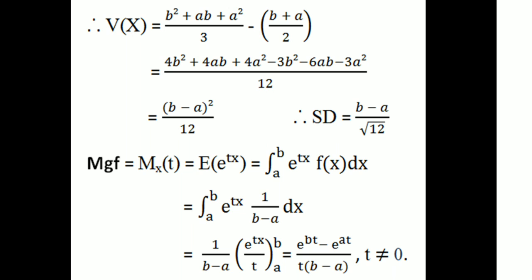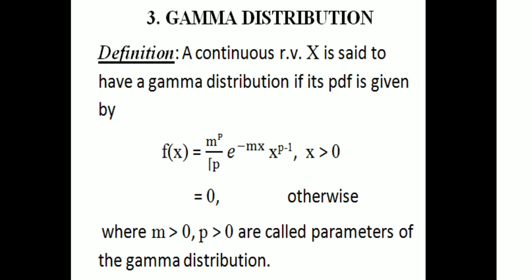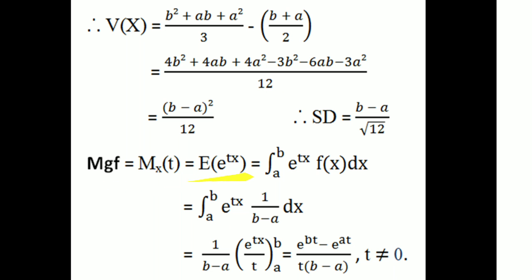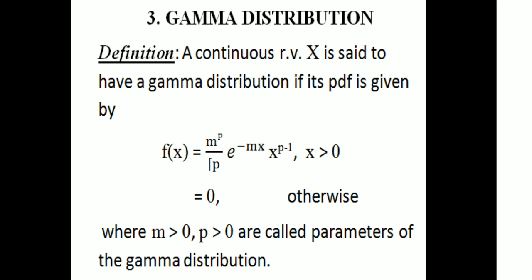The moment generating function of the uniform distribution: M_X(t) = E[e^(tX)] = integral from a to b of e^(tX) · (1/(b − a)) dx = (1/(b − a)) · [e^(tX)/t] from a to b = (e^(bT) − e^(aT)) / (T(b − a)), for T ≠ 0.